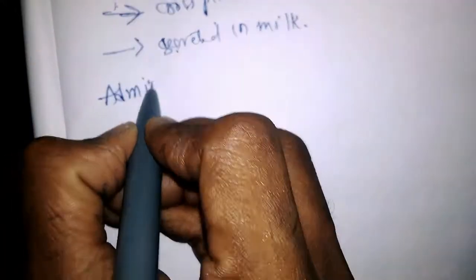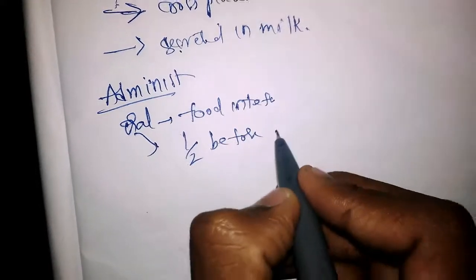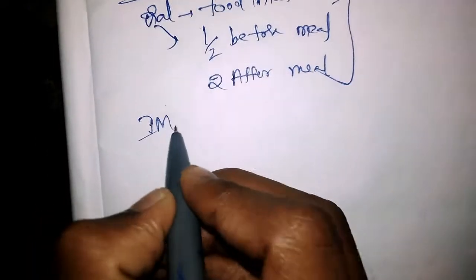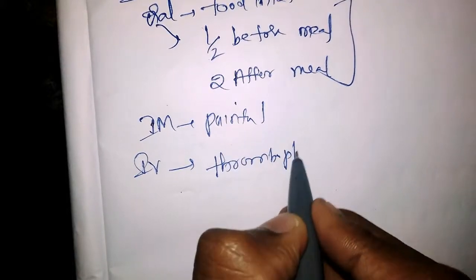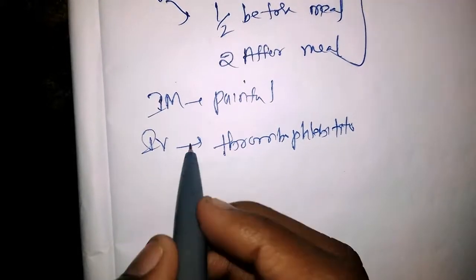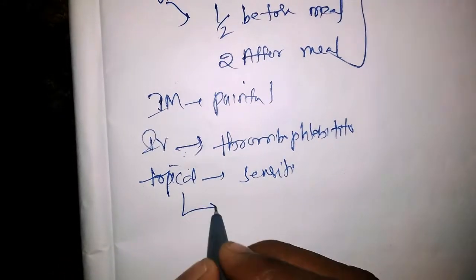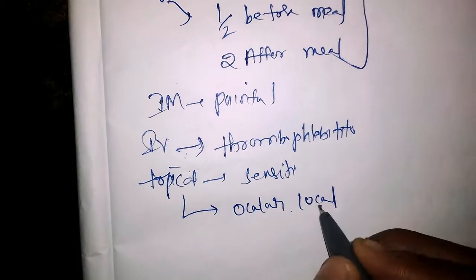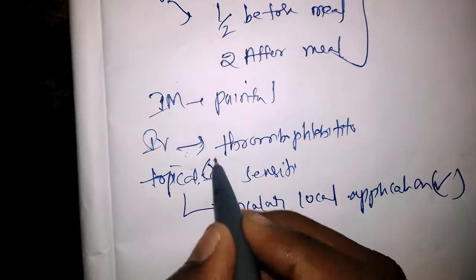Regarding administration: orally, since food interferes with absorption, they should be given half an hour before or two hours after a meal. IM injection is very painful. IV administration causes thrombophlebitis. Topical application causes photosensitivity, but ocular local application can be given; other topical routes are contraindicated.